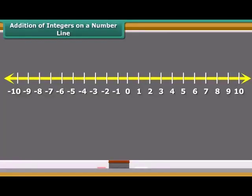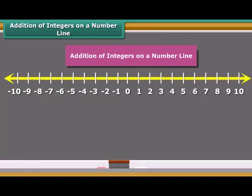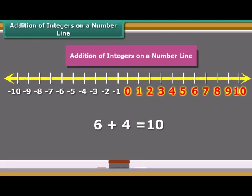Students, now we learn addition of two positive integers on a number line. If we add six and four on the number line, first we move six steps to the right from zero reaching six. And then we move four more steps to the right of six and reach ten. Thus we get six plus four is equal to ten.